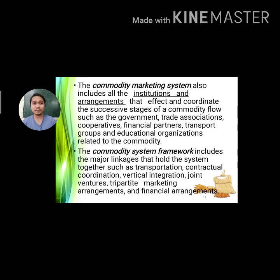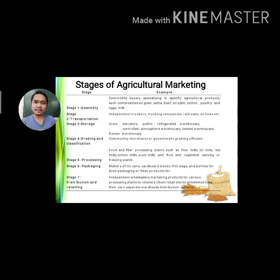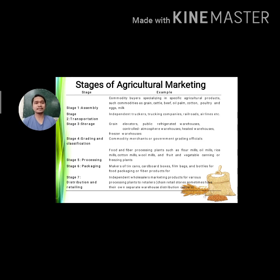There are seven stages of agricultural marketing. Stage one is the assembly stage, where community buyers specializing in specific agricultural products — such as grain, cattle, beef, oil palm, cotton, poultry and eggs, and milk — assemble the products from the farm.